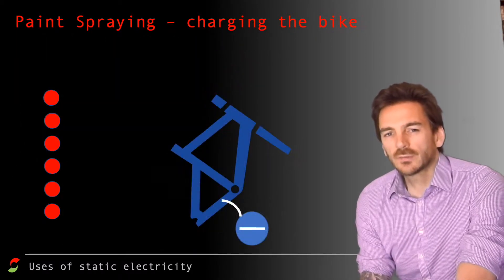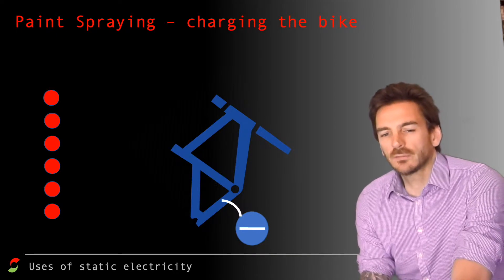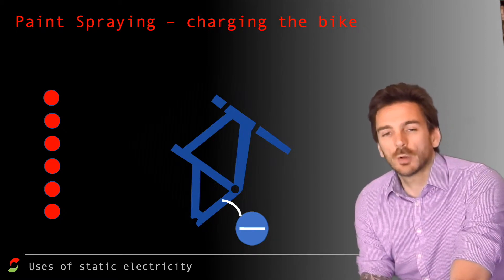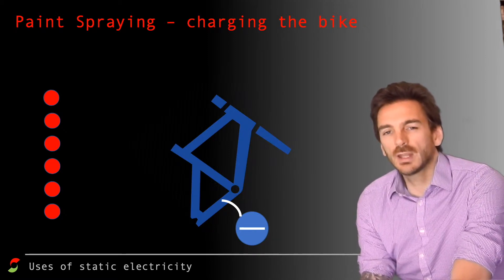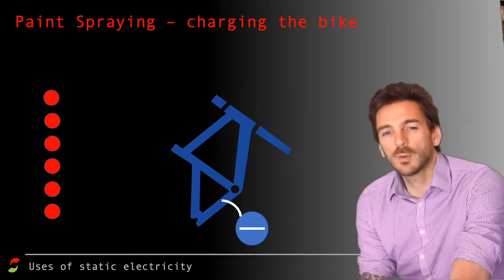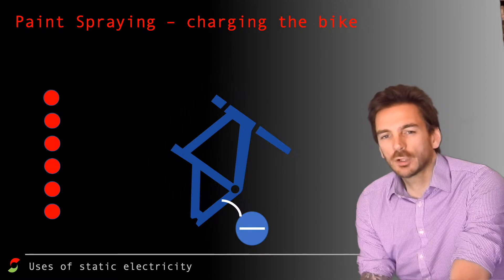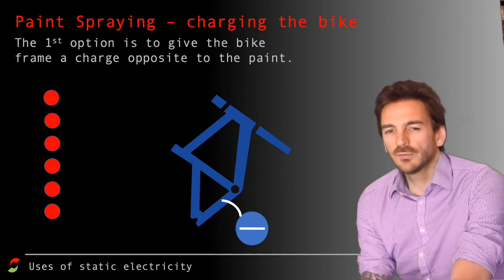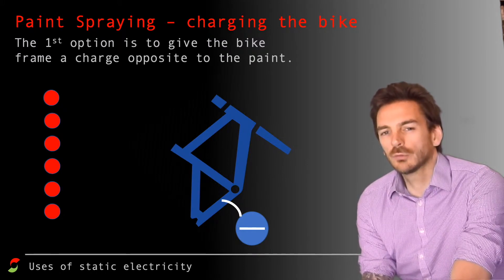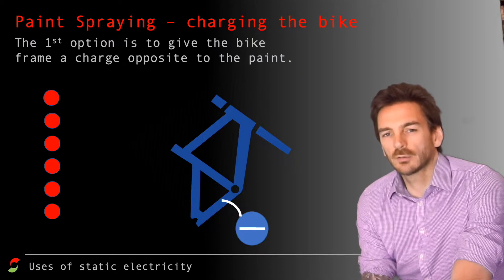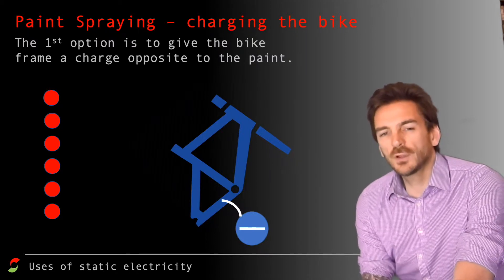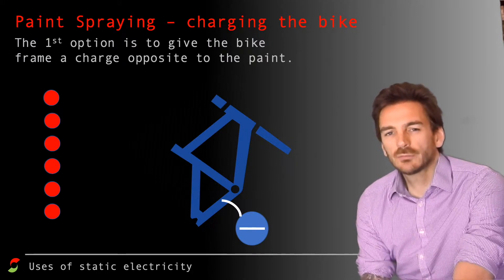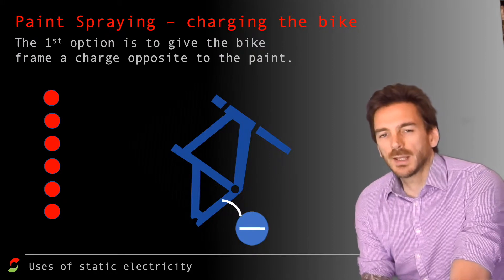The next thing is: if you give the bike frame an opposite charge, what happens to the paint? Let's assume that the paint is positively charged and the bike frame is given an opposite, negative charge. It's important that it's an opposite charge. This is the first option - giving the bike frame an opposite charge directly.